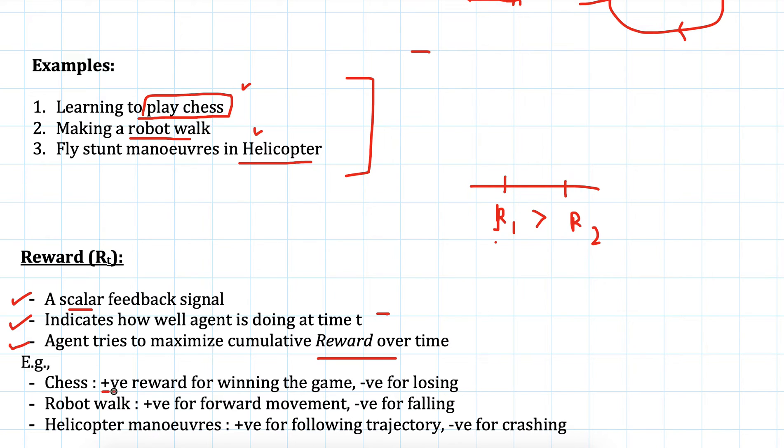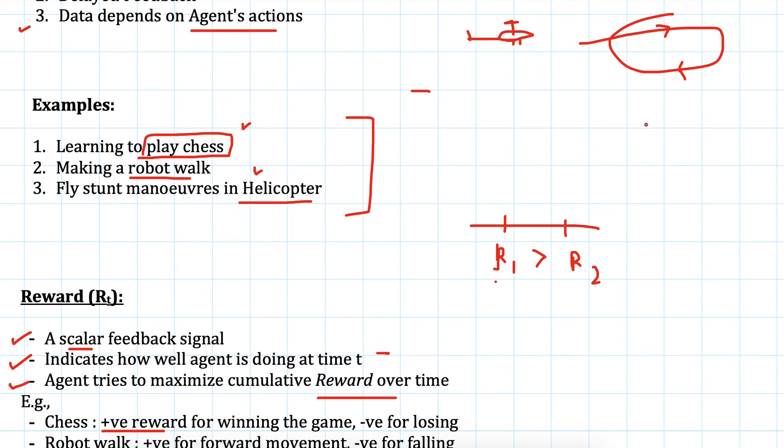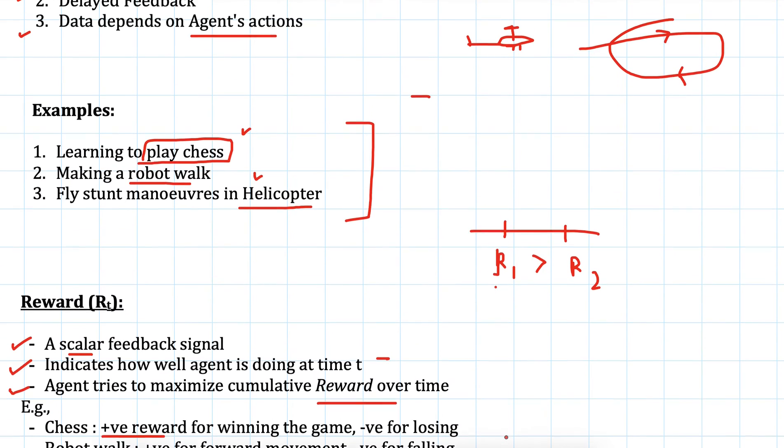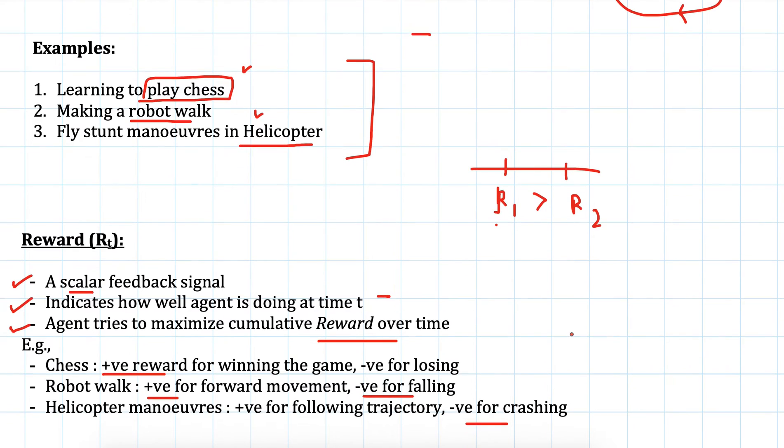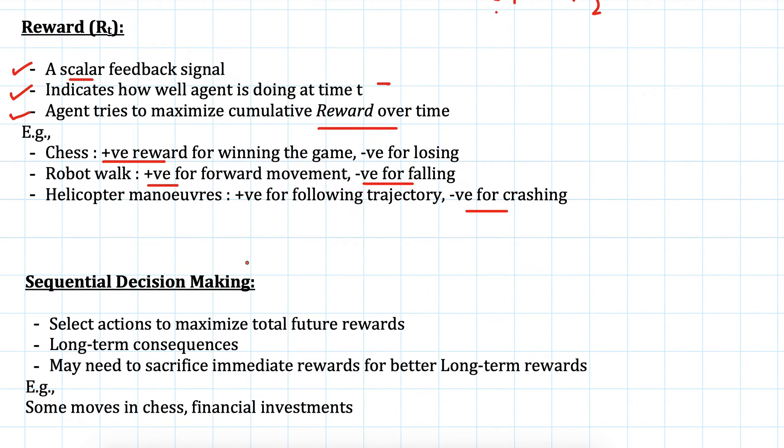For the chess game you can define positive reward for winning the game and negative for losing the game. In robot walk we can define positive for forward movement, negative for falling. Similarly for helicopter if it performs the trajectory that it was supposed to perform then it will get positive reward and negative if it crashes the helicopter.